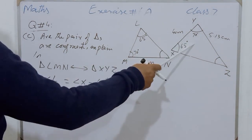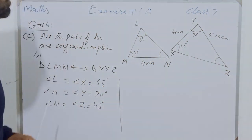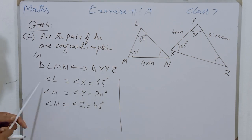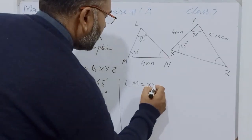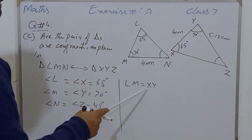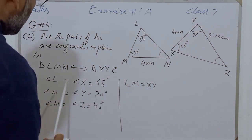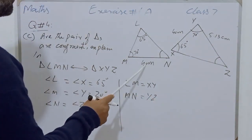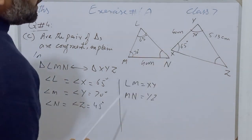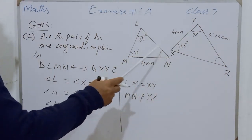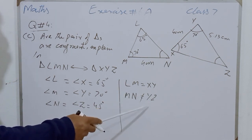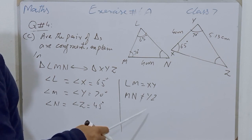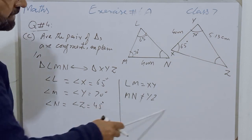Now we compare both triangles. Angle L equals Angle X (both 65 degrees), Angle M equals Angle Y (both 70 degrees), and Angle N equals Angle Z (both 45 degrees) — all angles are equal. However, checking corresponding sides: MN is 4 cm but YZ is 5.13 cm — these two sides are not equal. So these two triangles are not congruent because their corresponding sides are not equal, but both triangles are similar, which you will read in the next exercise.